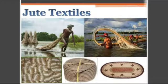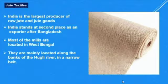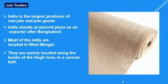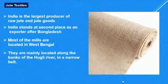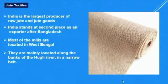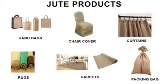Now we would study about the next agro-based industry, i.e. jute textile. India is the largest producer of raw jute and jute goods. India stands at second place as an exporter after Bangladesh. Most of the mills are located in West Bengal, near the Hooghly Basin. Here you can see pictures of various products which are made from jute and used in our daily life.